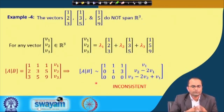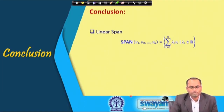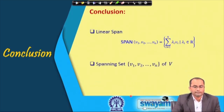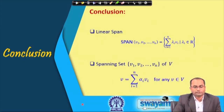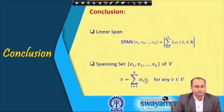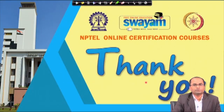In conclusion, the linear span is the set of all linear combinations of the given vectors. A set {v₁, v₂, …, vₙ} is called a spanning set of vector space V if every vector in V can be represented as a linear combination of those vectors. There is a lot more to discuss on spanning sets, which will follow in the next lectures. Thank you very much for your attention.